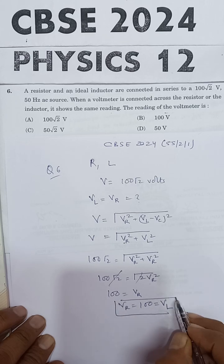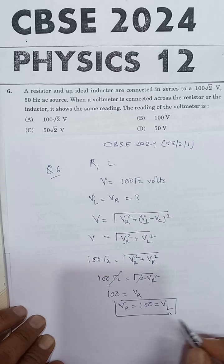And this equals VL. This is the voltmeter reading. So 100 volts is the answer, which is given in option B.